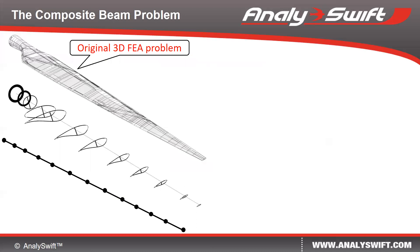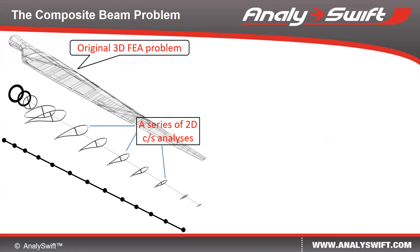First, let me describe the problem that VIPS solves. VIPS is a cross-sectional analysis code, enabling us to simplify the original three-dimensional problem into a one-dimensional beam problem. For example, for the design and analysis of a wind turbine blade, we usually cut many cross-sections along the spanwise direction and then carry out a series of 2D cross-sectional analyses to compute the cross-sectional properties as input for the one-dimensional static or dynamic beam analysis.